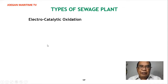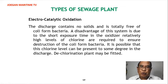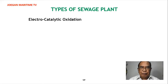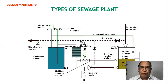With the electro-catalytic oxidation system, the discharge contains no solids and is totally free of coliform bacteria. A disadvantage of the system is that due to the short exposure time in the oxidizer, relatively high levels of chlorine are required to ensure destruction of coliform bacteria, and it is possible that this chlorine level can be present to some degree in the discharge. The chlorination plant may be fitted accordingly. These are examples of the electro-catalytic oxidation sewage plant.